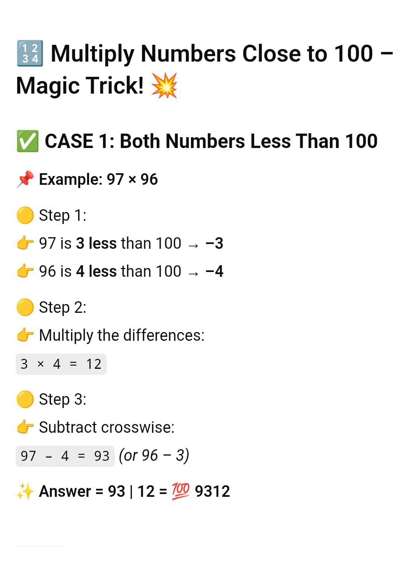Let's try with example. First case, both numbers less than 100. Example, 97 x 96. 97 is 3 less than 100, so minus 3.